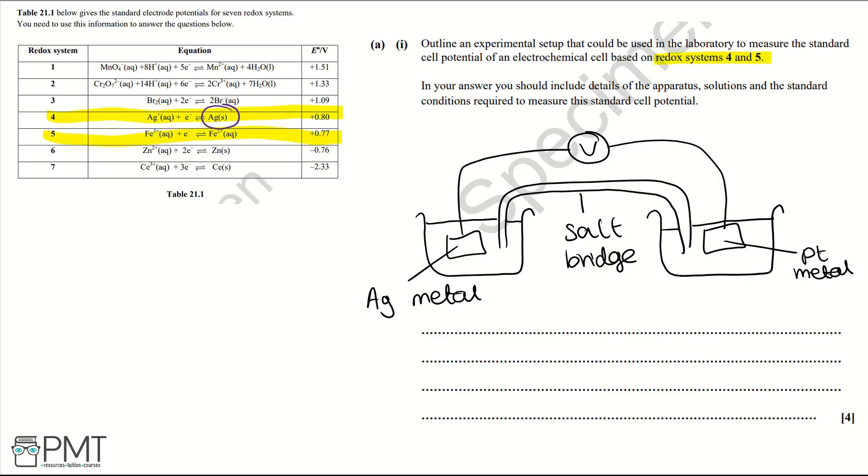Then we need to identify what's going to be in each beaker. In the beaker on the left we're going to have one mole per decimetre cubed of silver one plus ions and they're aqueous. In the beaker on the right we're going to have one mole per decimetre cubed of iron two plus ions and they're aqueous, plus one mole per decimetre cubed of iron three plus ions in aqueous solution.